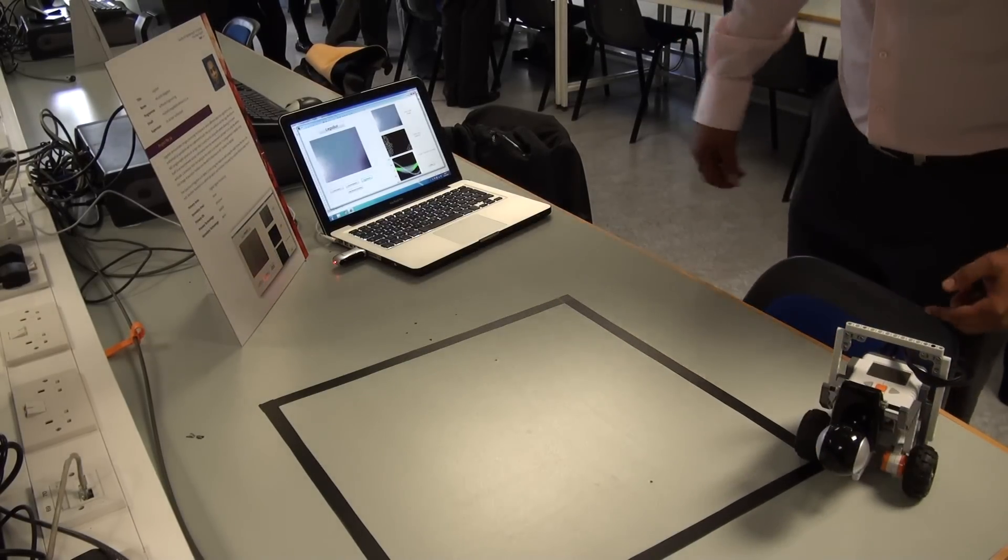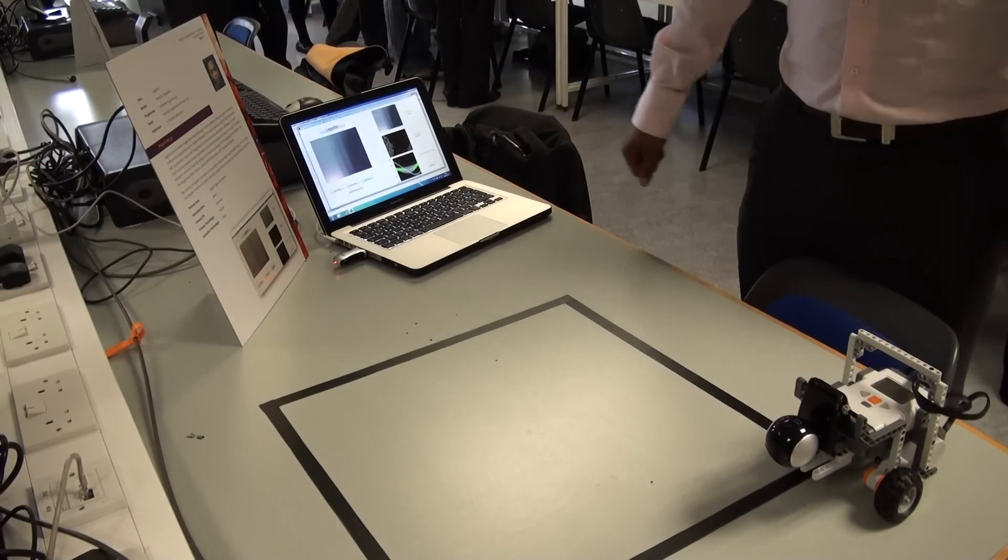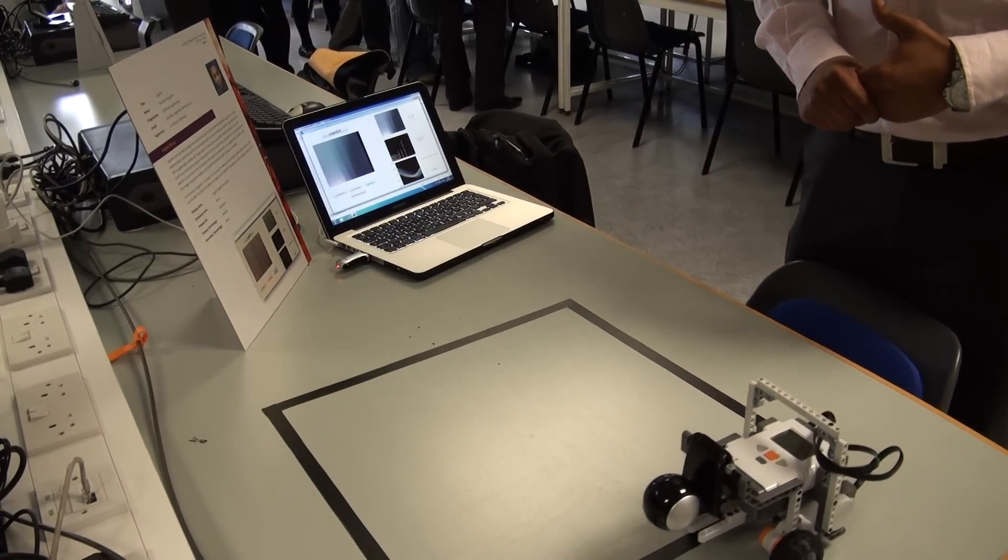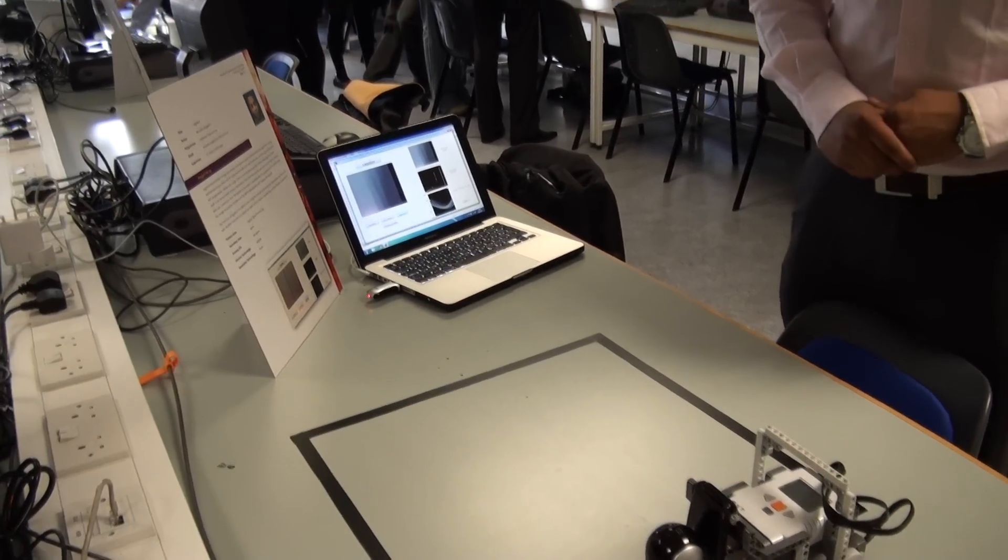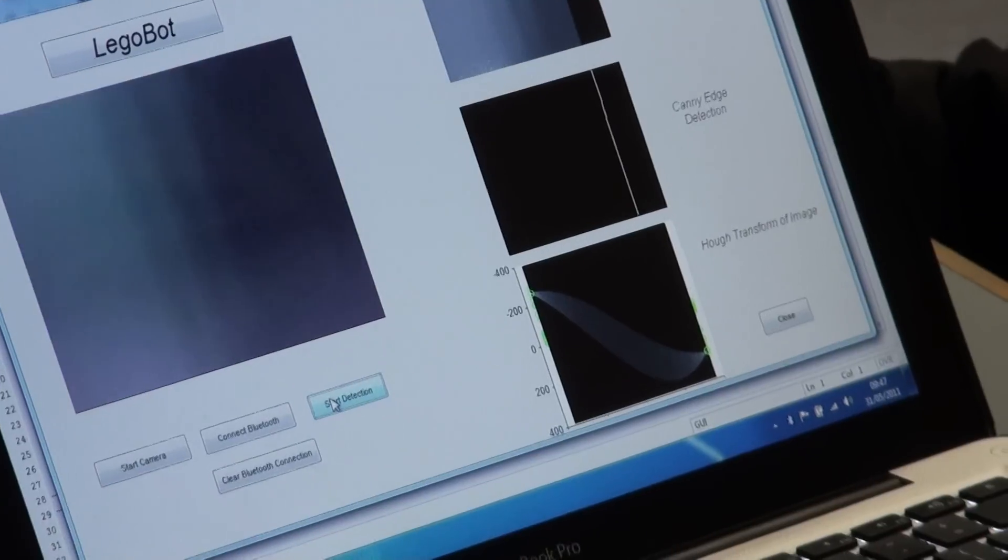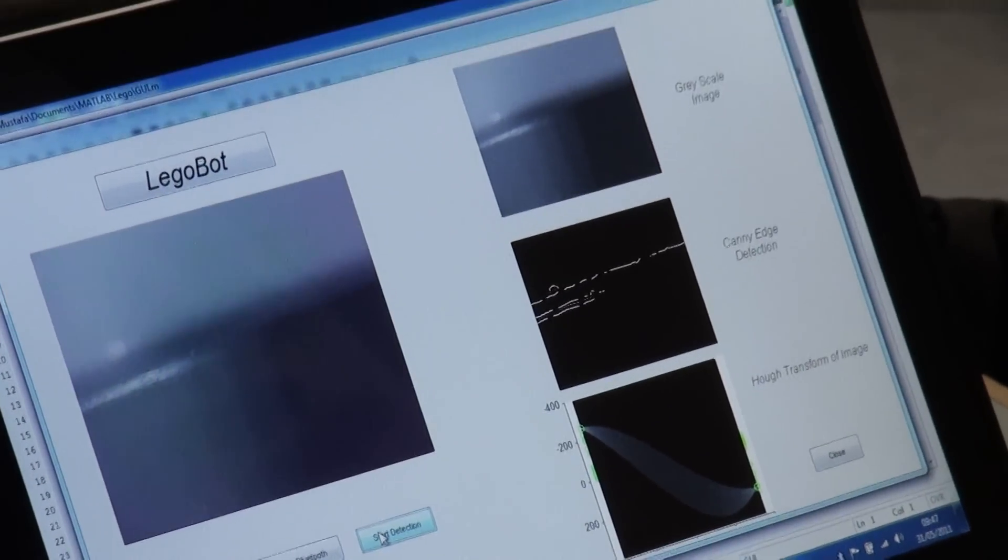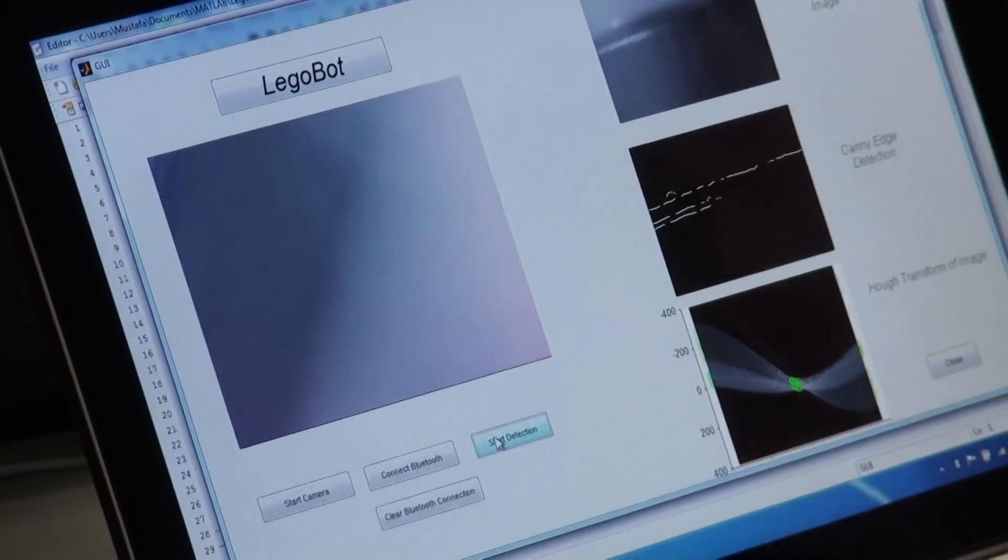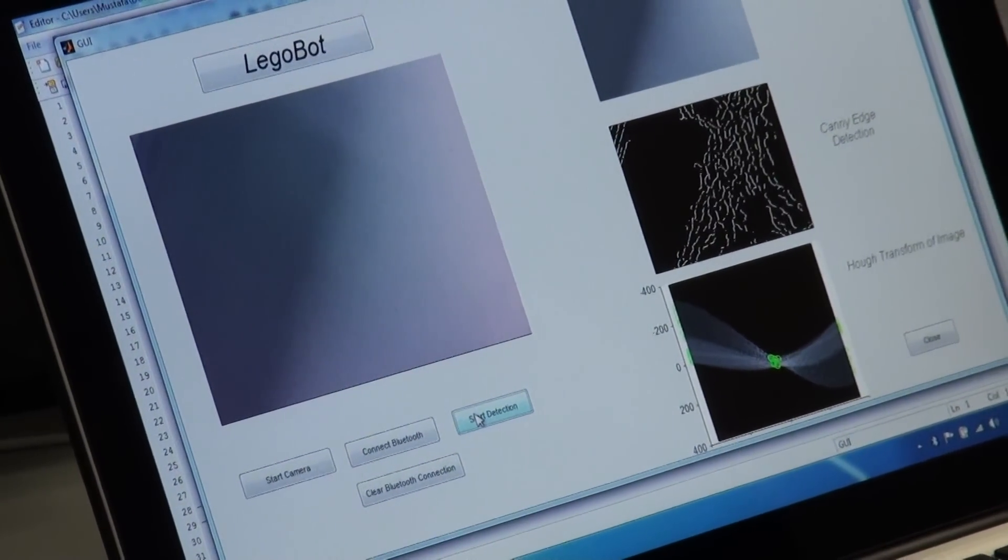As you can see, I've used different image detection techniques here to let the robot follow the line. I've used several programming toolboxes for MATLAB and as you can see the robot is turning back around now.